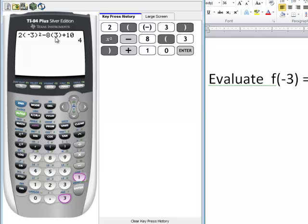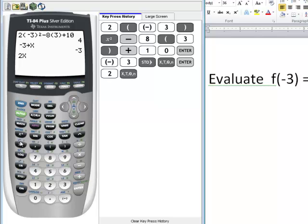This next way makes it a little easier for us to get the right answer. We have negative 3 and we want to store that value into the variable x. Now what this means is that every time I type in x on this main screen, it's going to actually evaluate for negative 3. I can just type in my 2x² - 8x + 10.